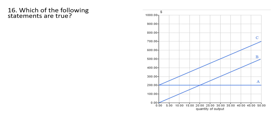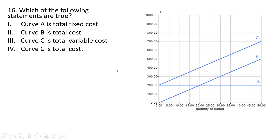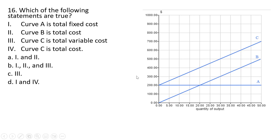Using the figure on the right, which of the following statements are true? Curve A is total fixed cost — that is true; this horizontal line represents total fixed cost. Curve B is total cost — no, that is incorrect; that would actually be the total variable cost. Curve C is total variable cost — no, Curve C is actually the total cost, which is total variable cost plus total fixed cost. Statement 4, Curve C is total cost — yes, that is correct. So the correct answer is D: statements 1 and 4.